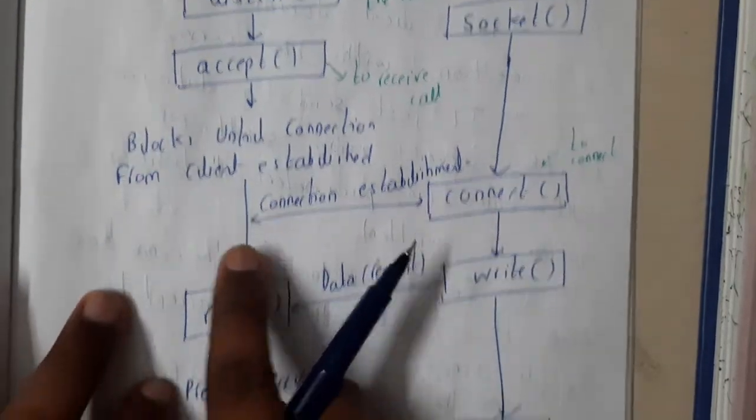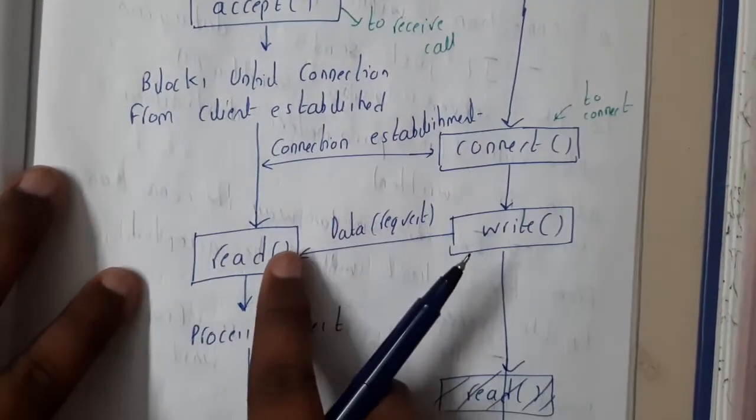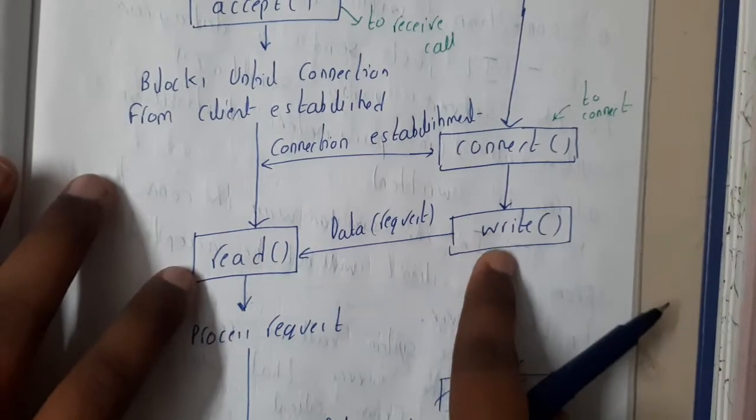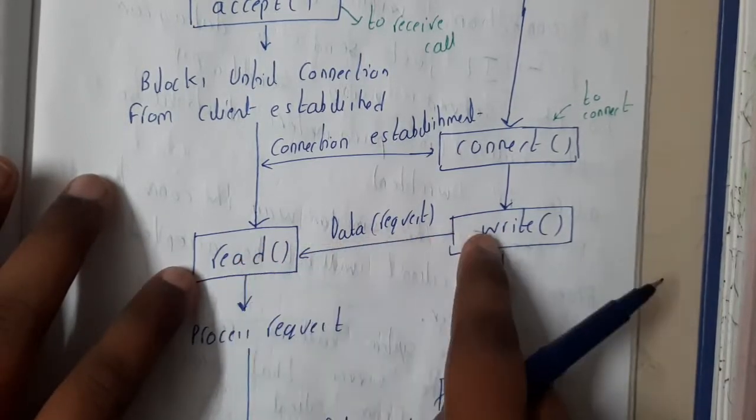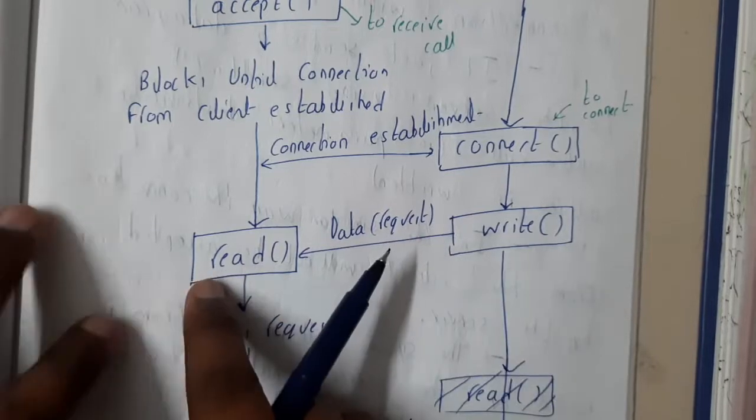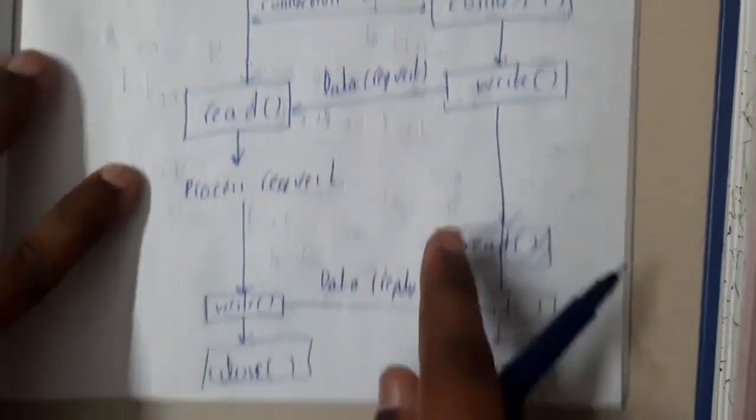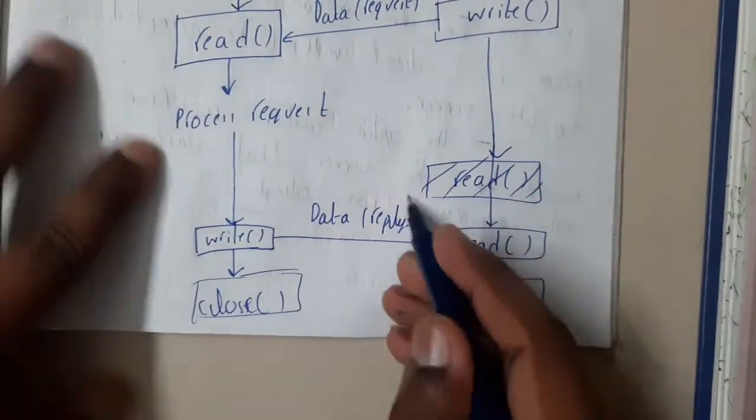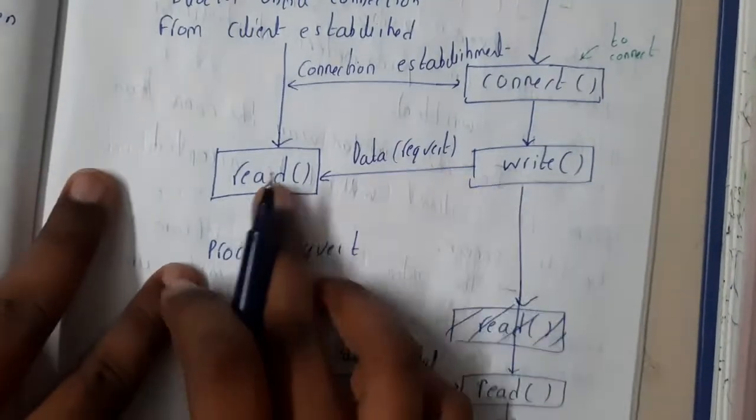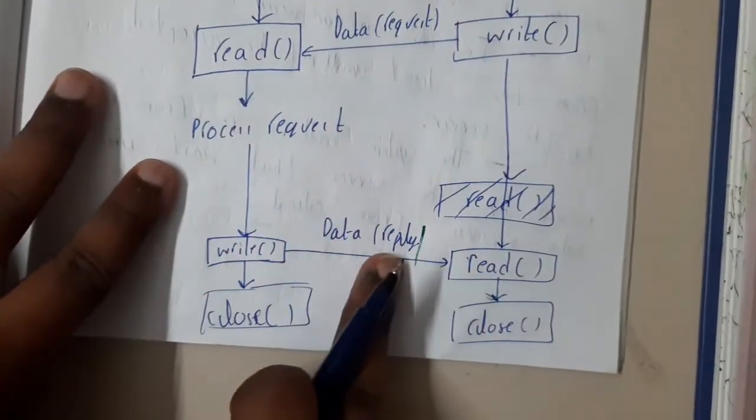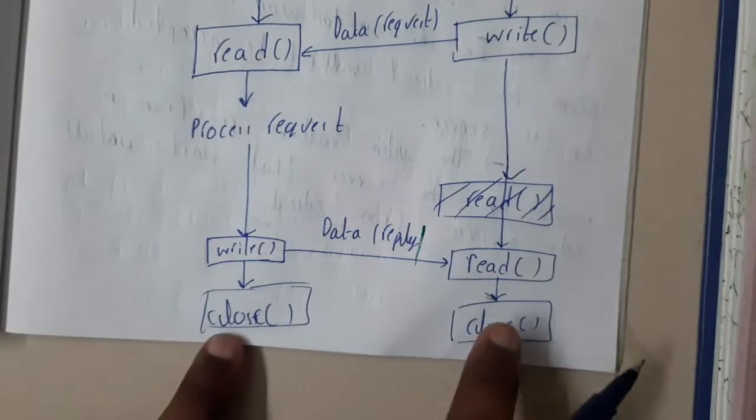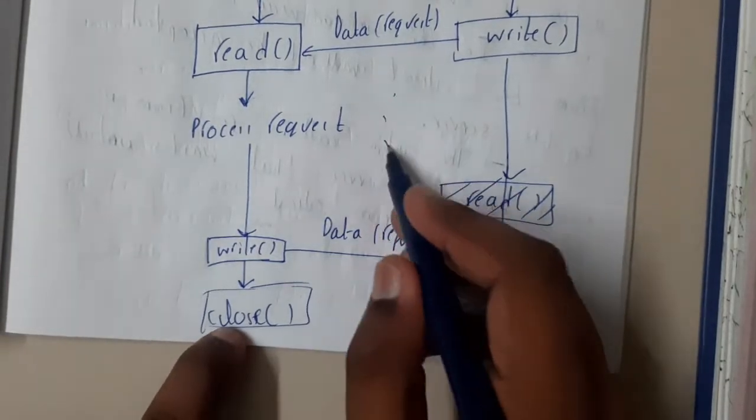Then the client will be writing the data, requesting for that particular data, and the server will be responding him back with the data. Here you can see data reply, here data request will be sent and here write will be sending the data. Then you'll be closing on both sides. So this process continues in between multiple times.